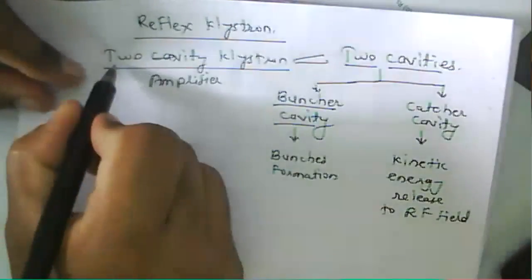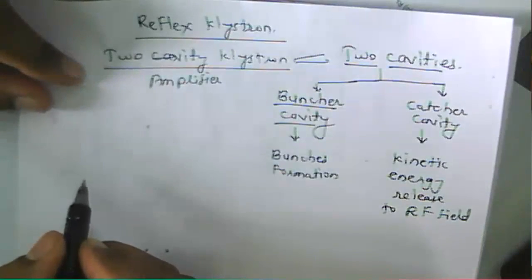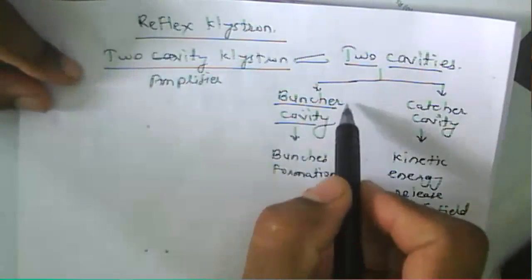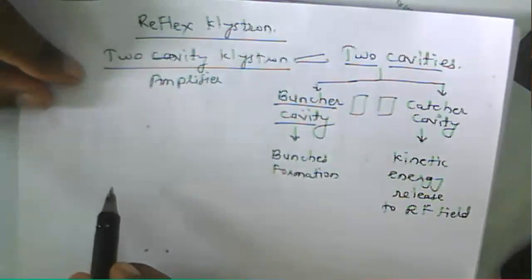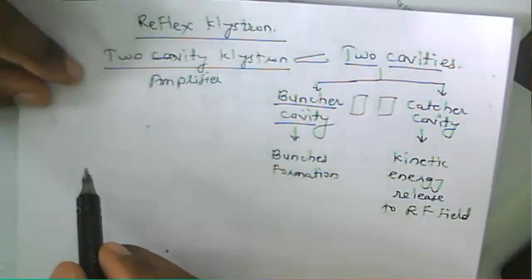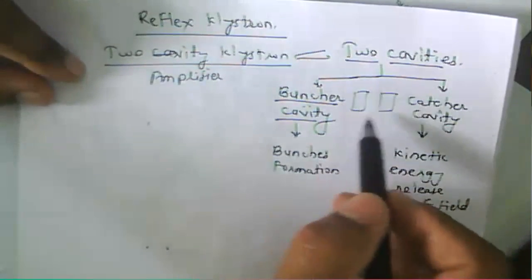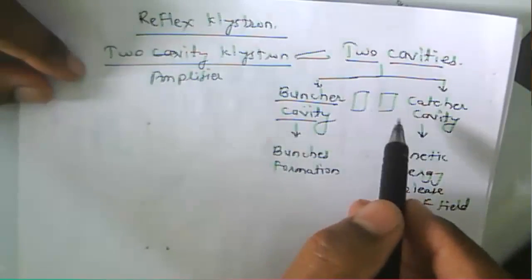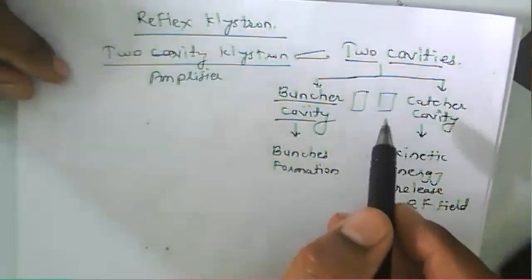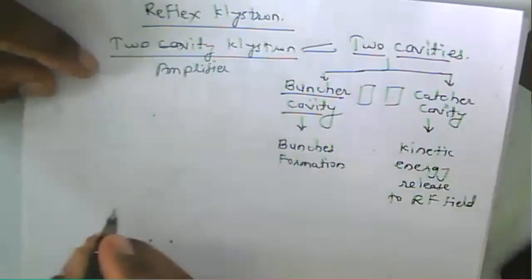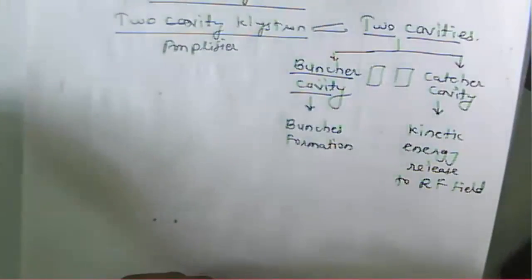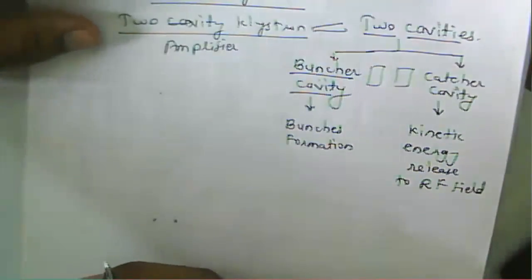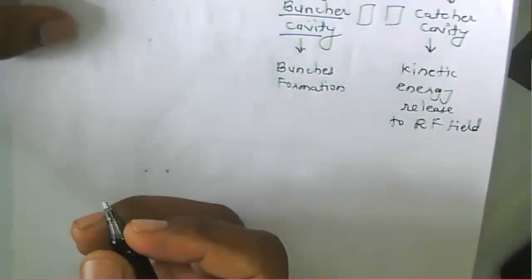Next is about a reflex klystron. After the two-cavity klystron, we have the multi-cavity klystron. In between the buncher cavity and catcher cavity, there are intermediate cavities used to provide more energy to the catcher cavity, so we get a more amplified power output. To increase the power level, we can use a multi-cavity klystron. Both two-cavity and multi-cavity klystrons are used as amplifiers.